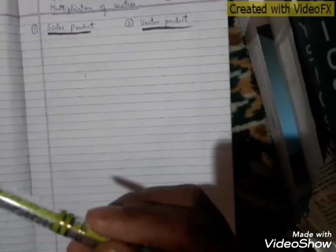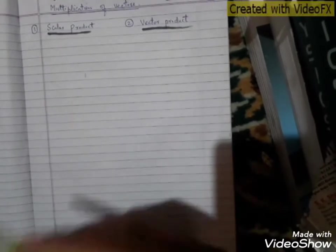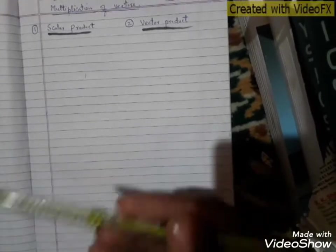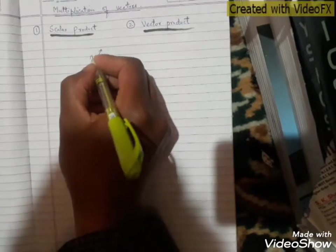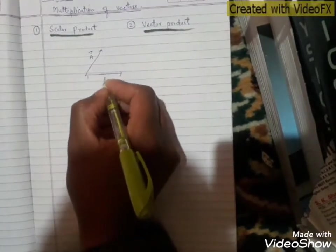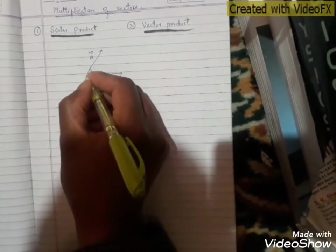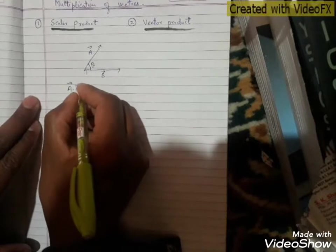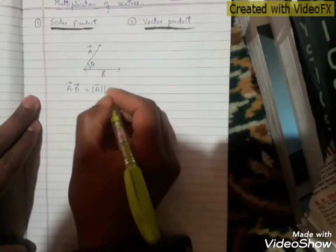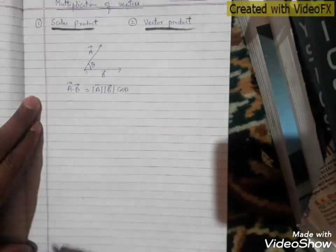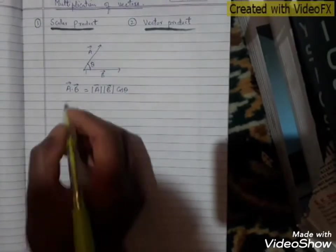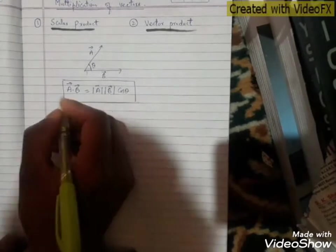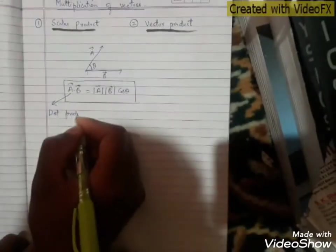So what is scalar product? If we multiply two vectors and the product is a scalar quantity, we call that product a scalar product. Suppose we have two vectors, vector A and vector B. Their tails are joined and there is some angle theta between them. The scalar product is denoted as A dot B, which is the magnitude of vector A multiplied by the magnitude of vector B and the cosine of angle theta between vectors A and B. This A dot B we also call as dot product.